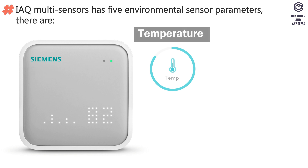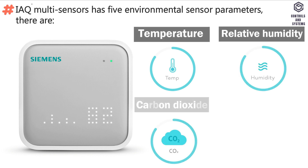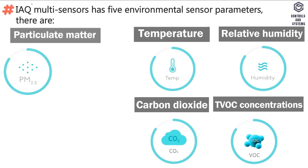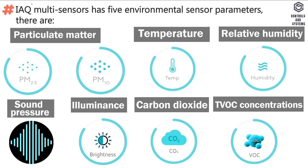The five environmental sensor parameters are: temperature, relative humidity, carbon dioxide, total volatile organic compounds (TVOC), and particulate matter 2.5 and 10. Two complementary parameters are sound pressure and illuminance.